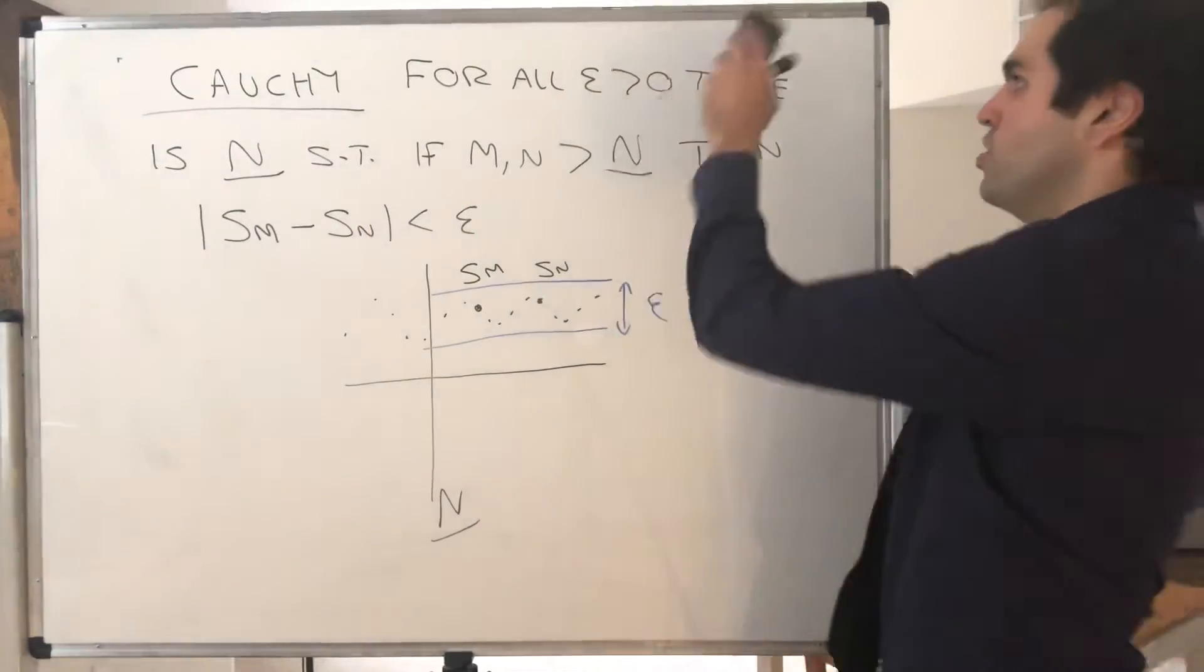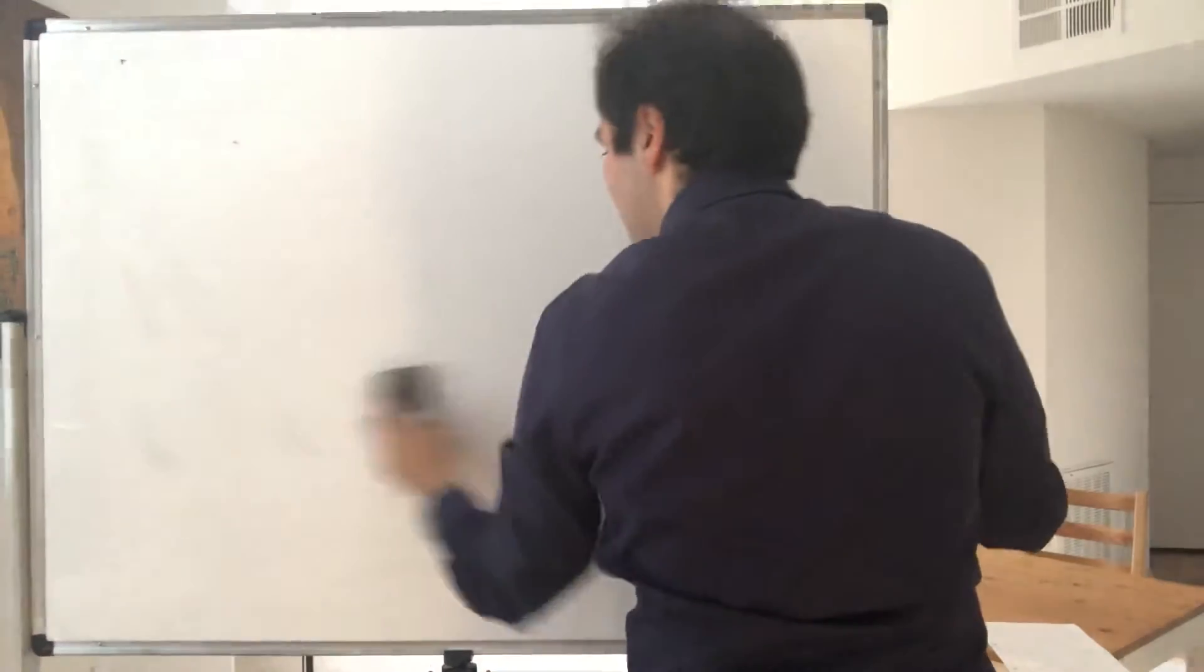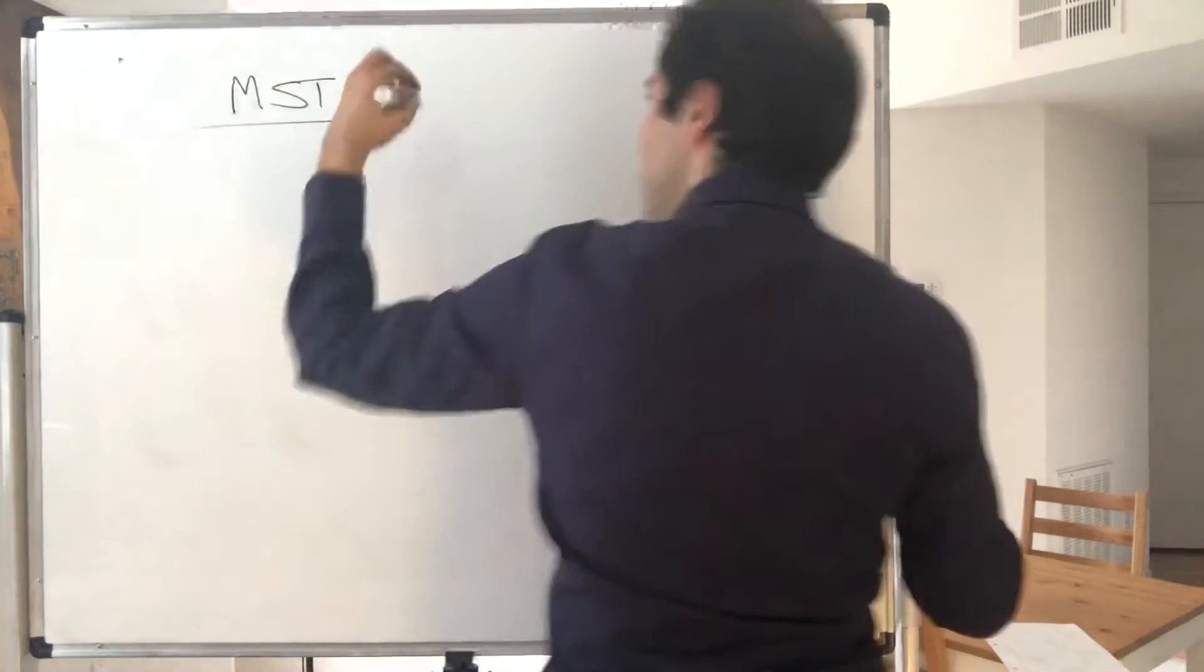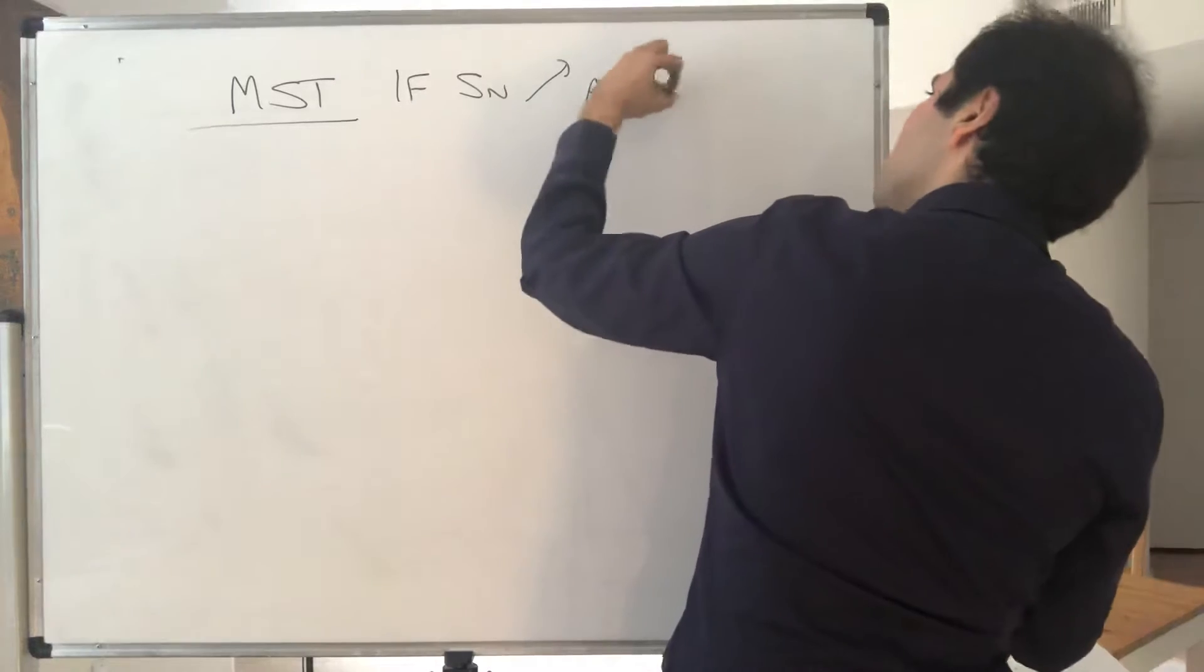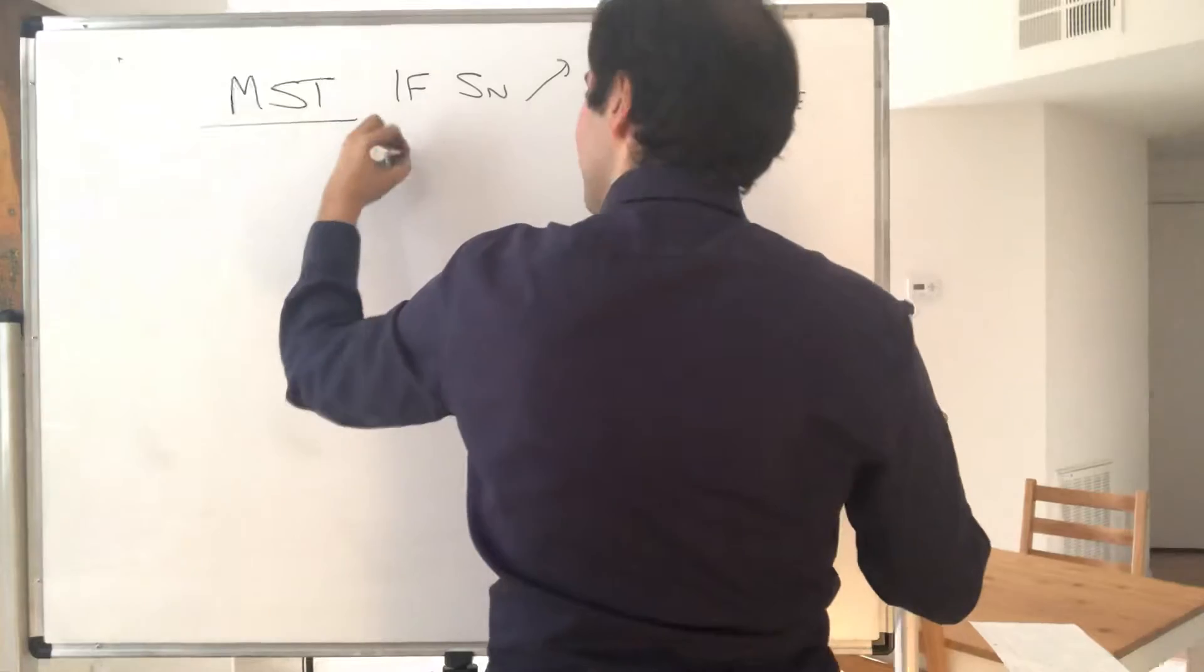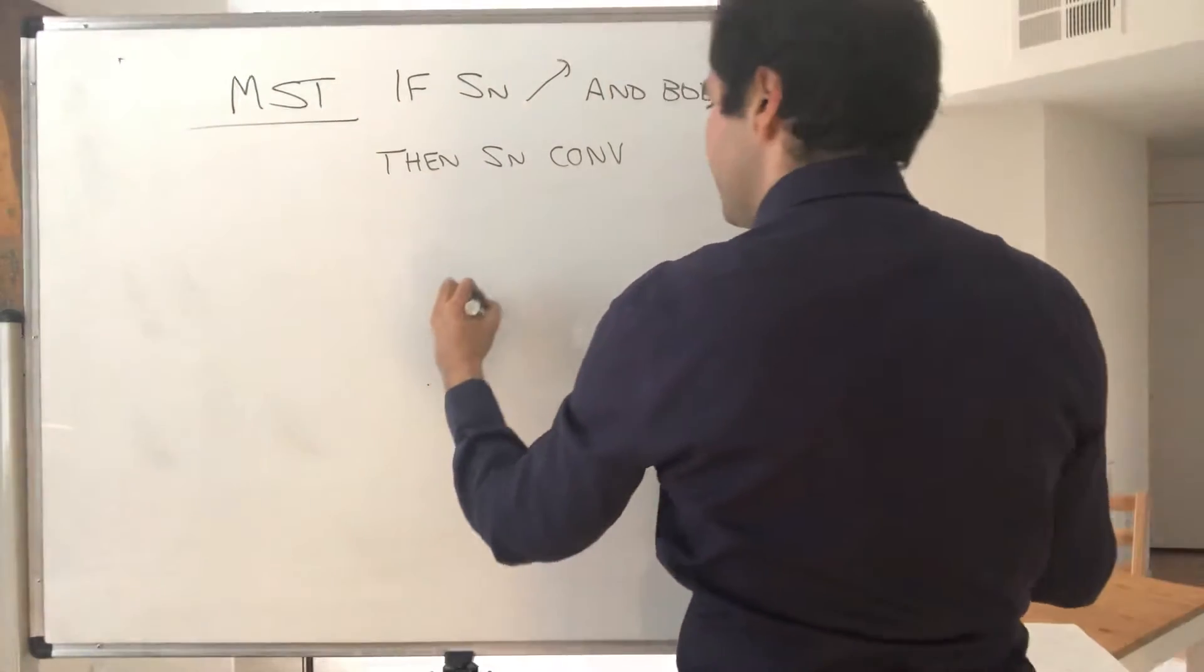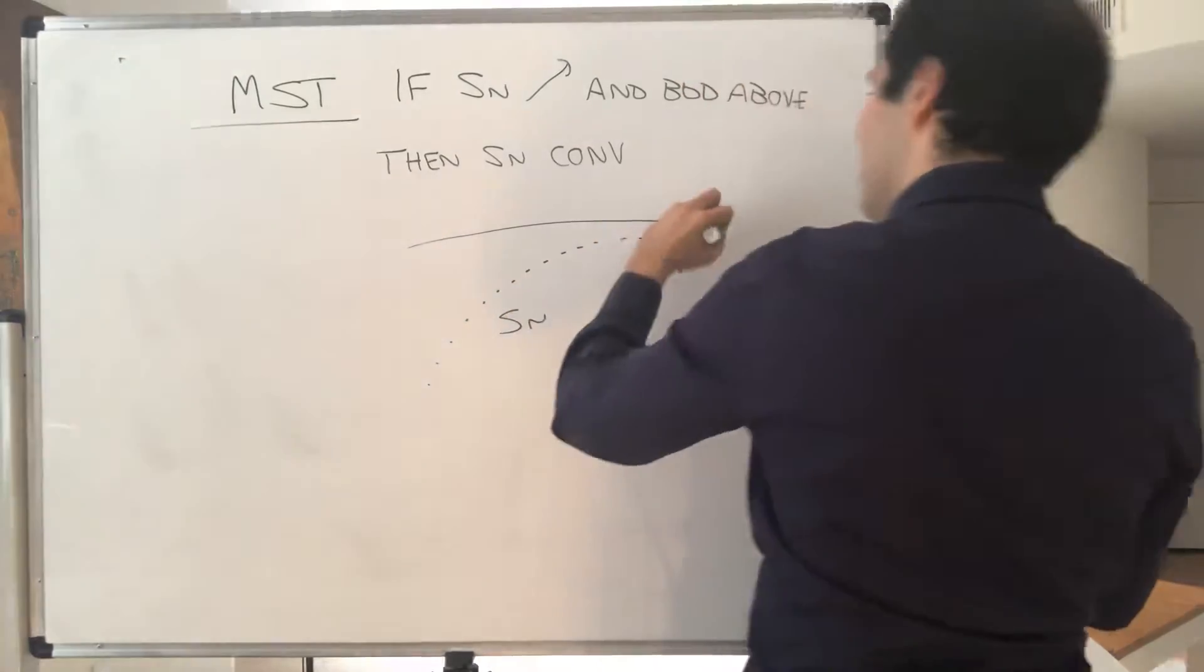However, there's an even better way and that's what's called the monotone sequence theorem, which simply says that if Sn is increasing and bounded above, then Sn converges. In other words, suppose you have a sequence that's increasing and that has a ceiling, then it turns out that sequence must converge.